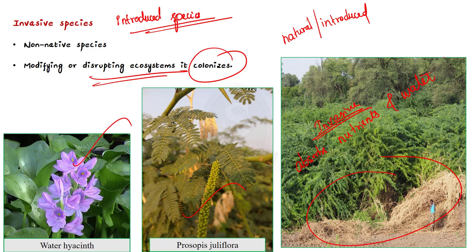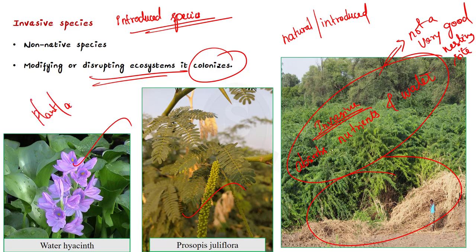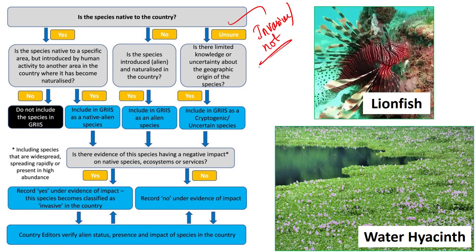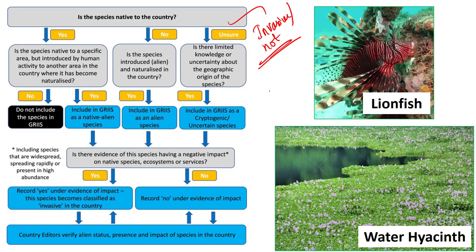Note that Prosopis juliflora has been mentioned as not a very good nesting site. In simple words, invasive species can be any plant, animal, pathogen, or any other organism that is non-native to an ecosystem and which may cause economic or environmental harm or adversely affect human health. Monitoring the growth of invasive species is very important because it has a significant impact on the environment.